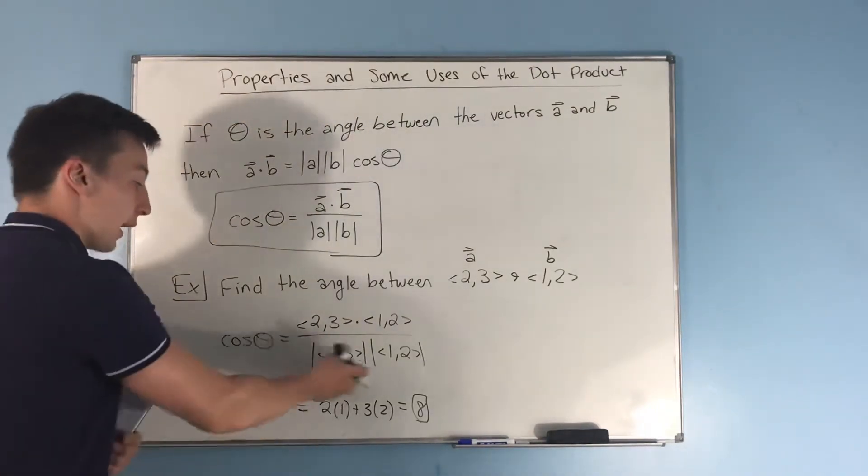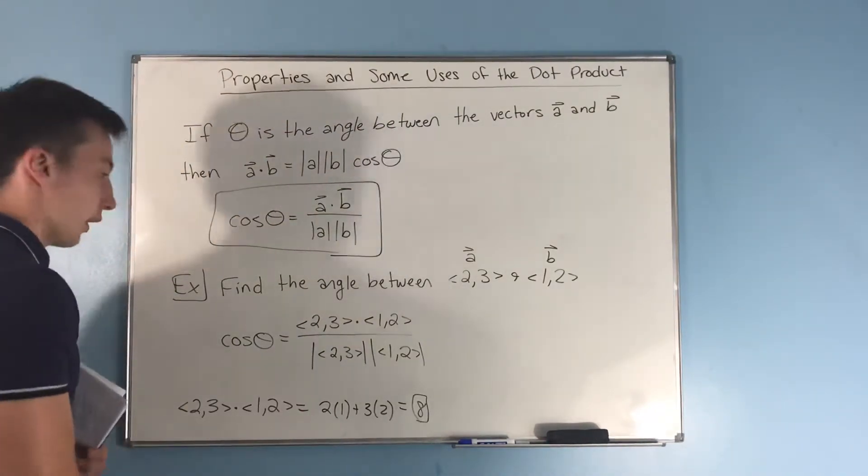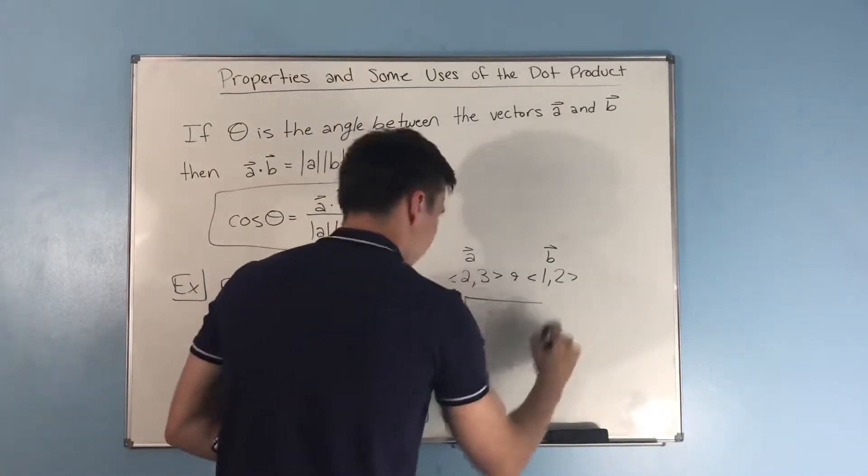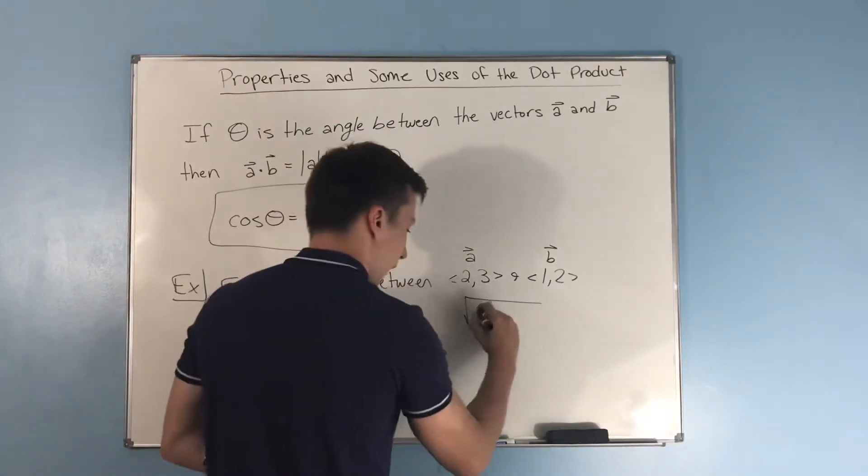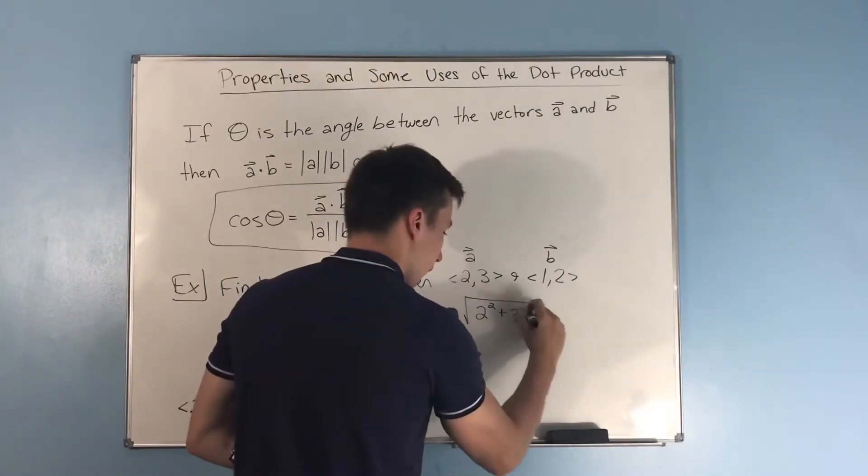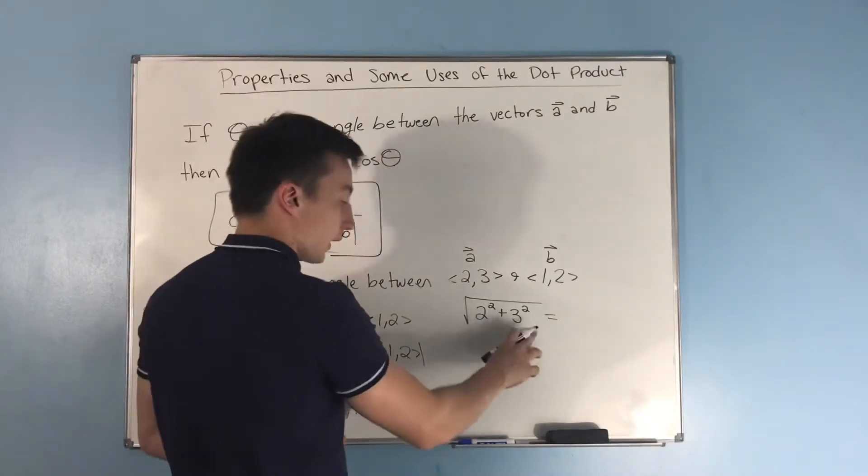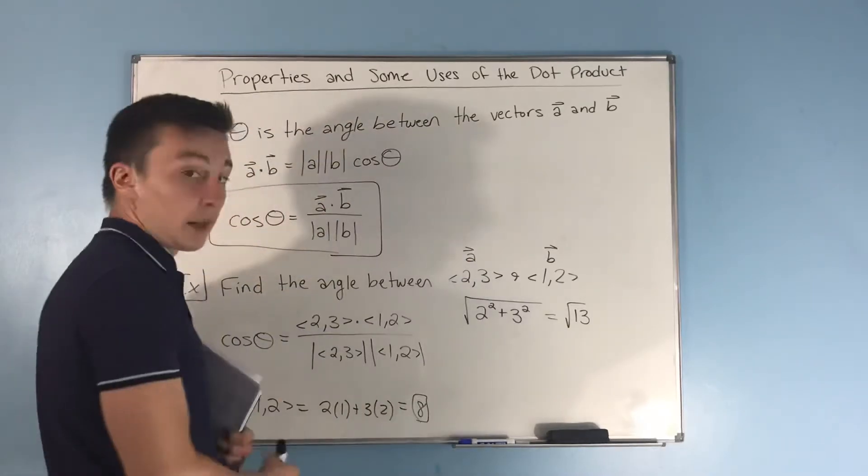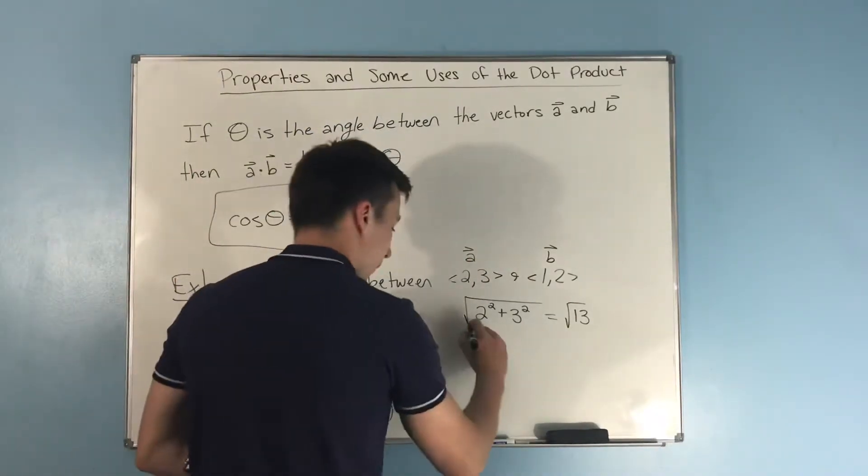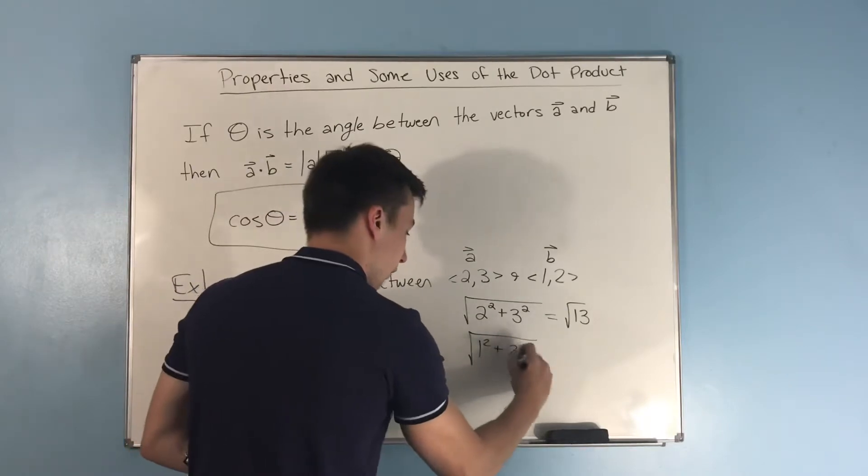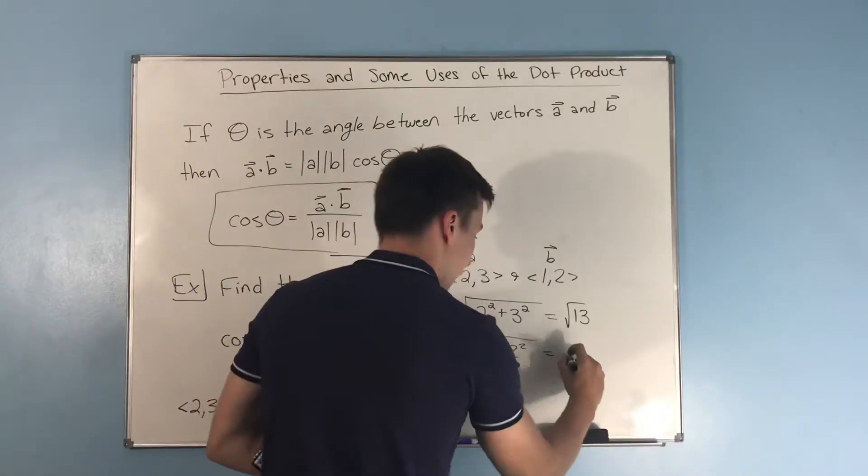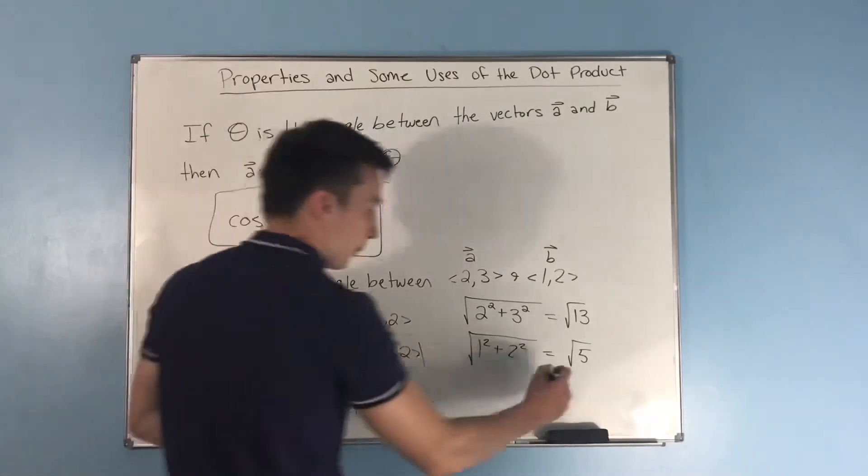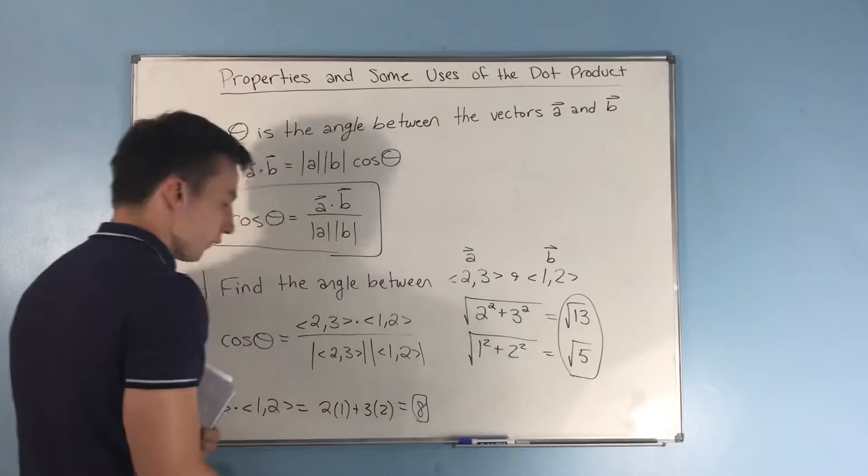We also need to find the magnitude of 2, 3. We have the square root of 2 squared plus 3 squared, and that's going to equal 4 plus 9, and that's rad 13. And then we'll do the magnitude of 1, 2. That's the square root of 1 squared plus 2 squared, and that's going to be equal to rad 5. So that's going to be your bottom piece, rad 13 and rad 5.